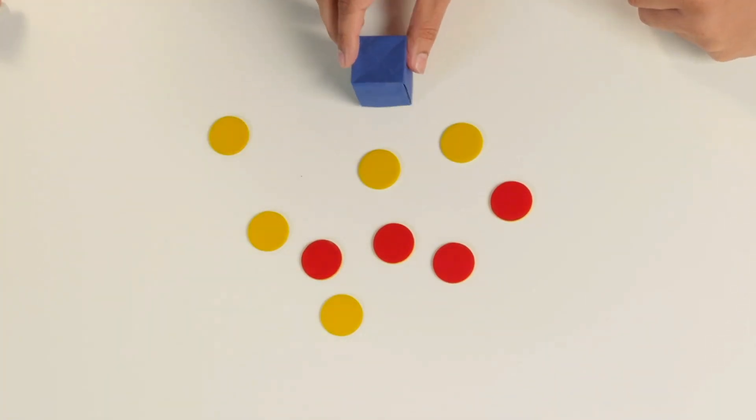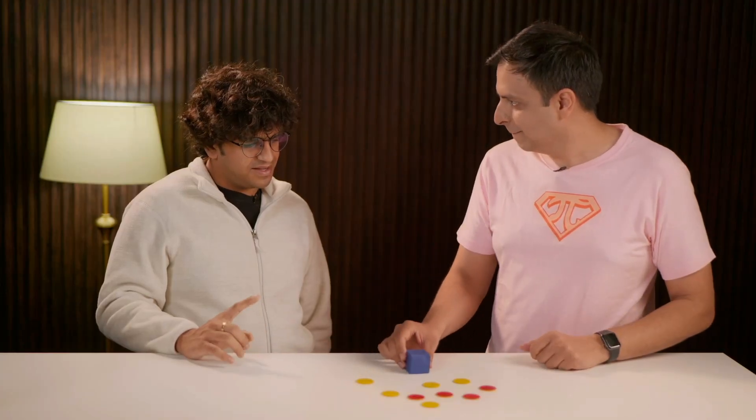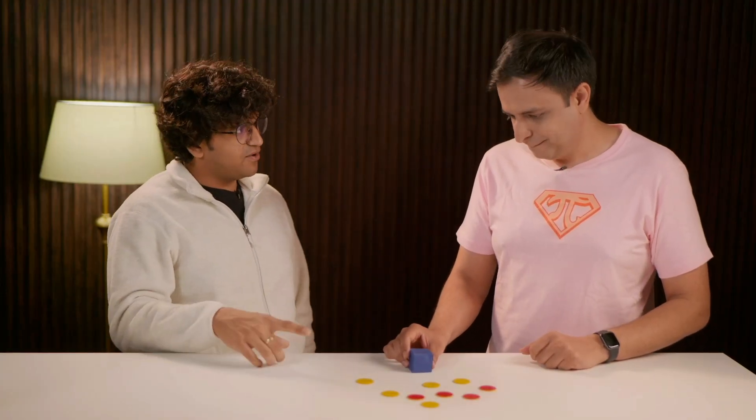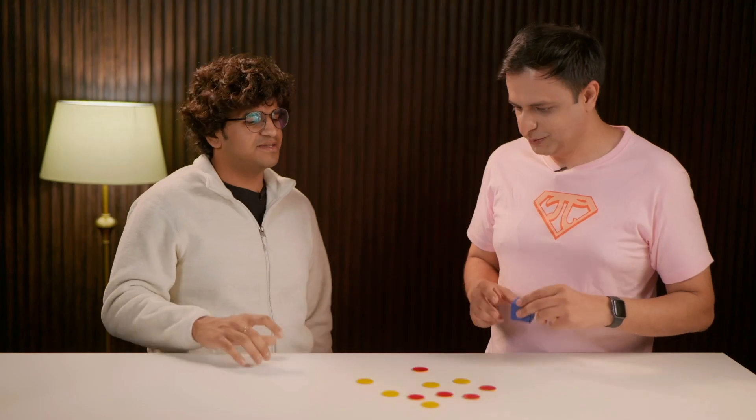And if you had hid this coin, I have four reds. So what should this coin be? It's a red because we started with an odd number of red coins. Yeah. That's true. Okay.